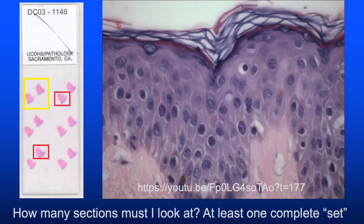This brings us back somewhat full circle to the previous session on common skin disorders, where we reviewed basic histology in order to start to be able to interpret abnormalities in inflammatory and neoplastic skin diseases.